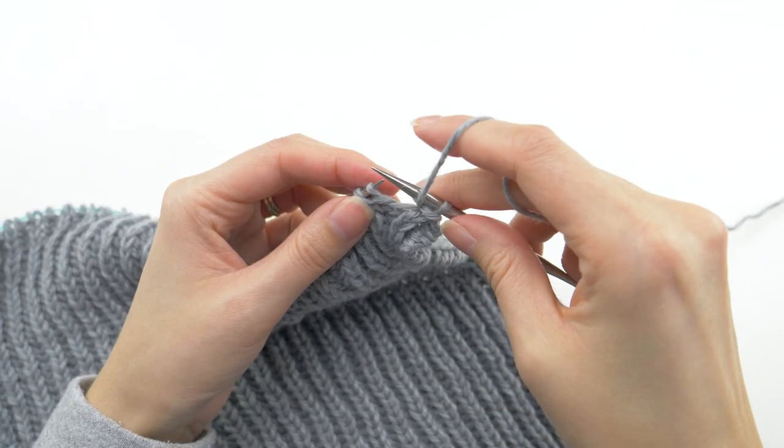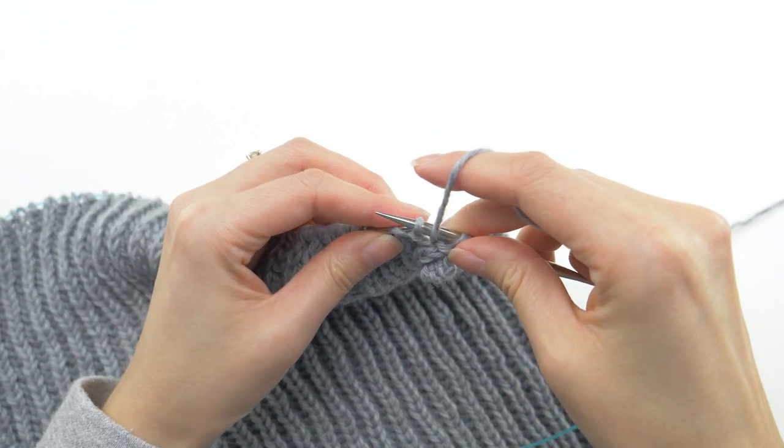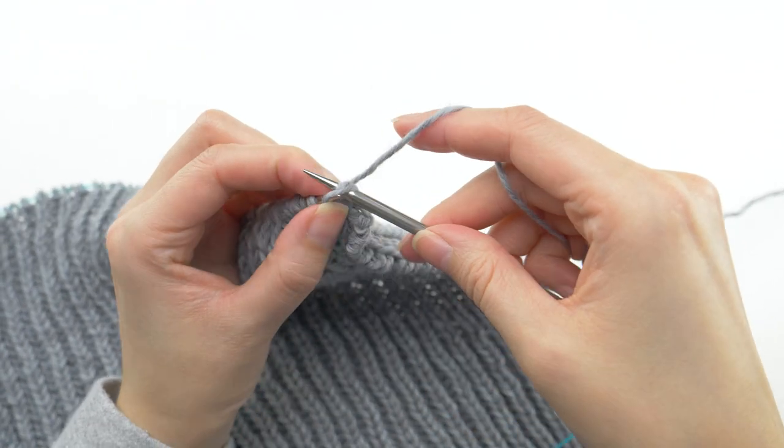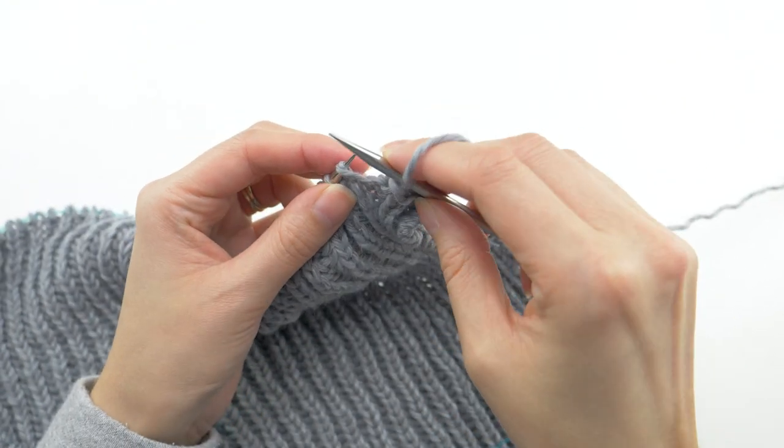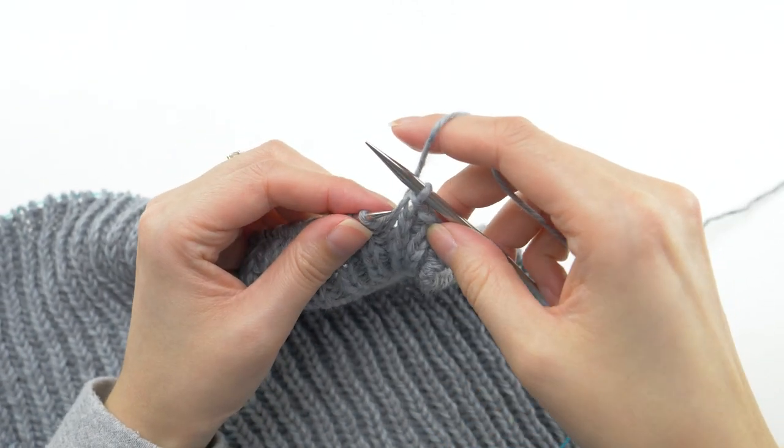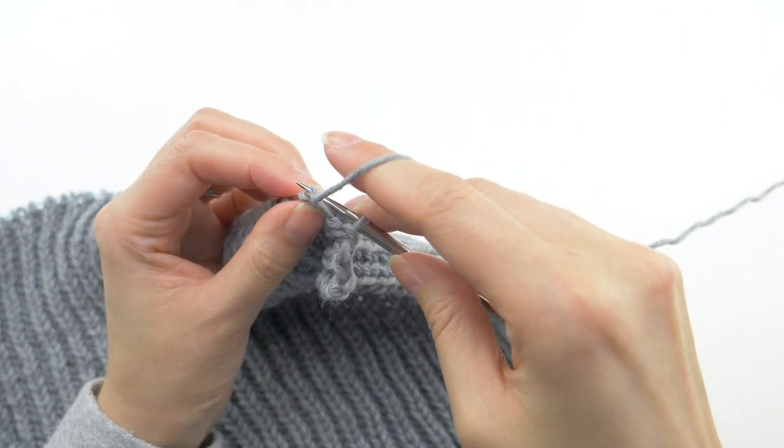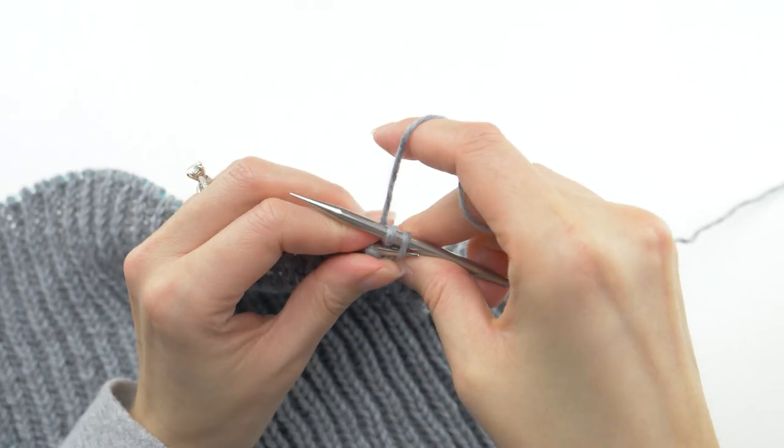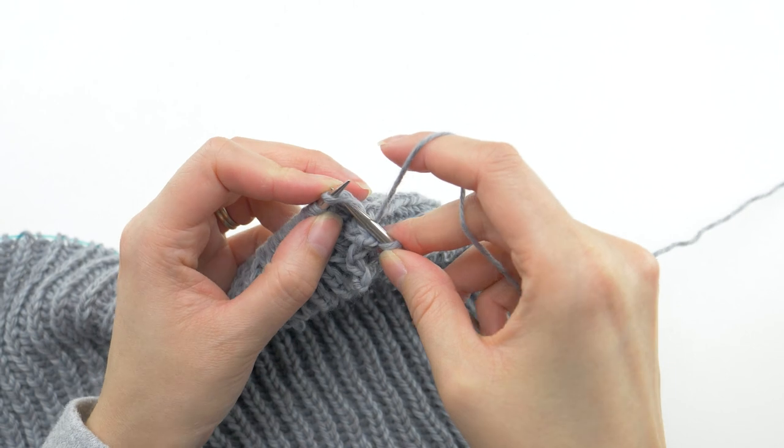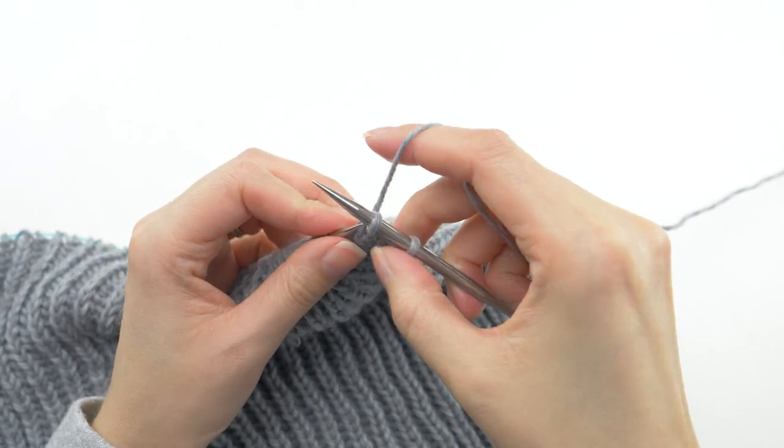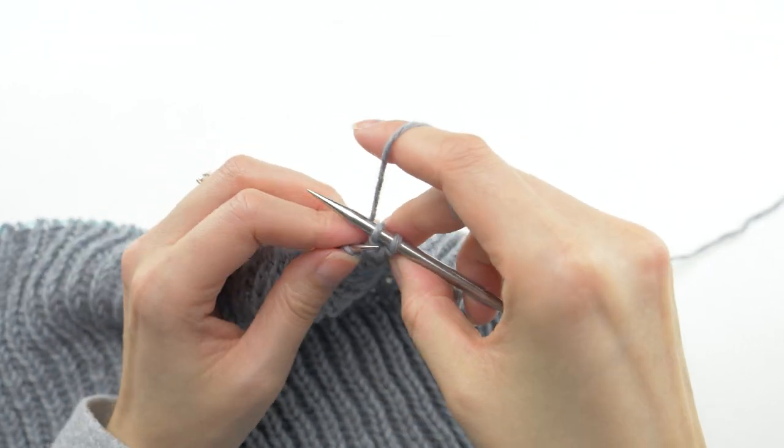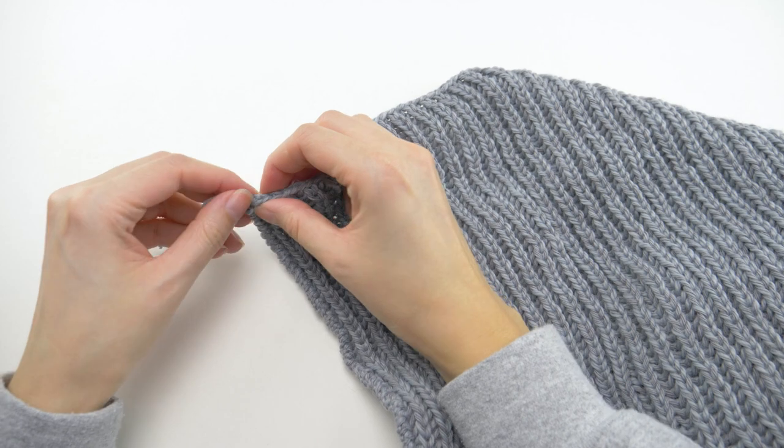Then the repeat begins. Purl the next stitch, and yes, old habits die really hard here. Don't slip it like you'll probably see me do 3 or 4 times. Always purl those stitches, and then pass them over. Now keep going with that repeat until only one loop remains on your needle.